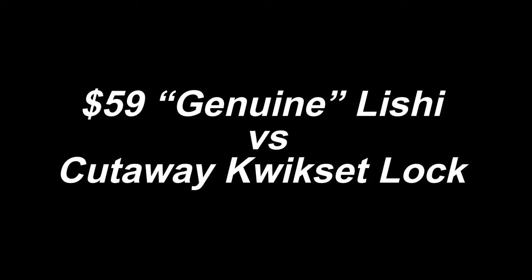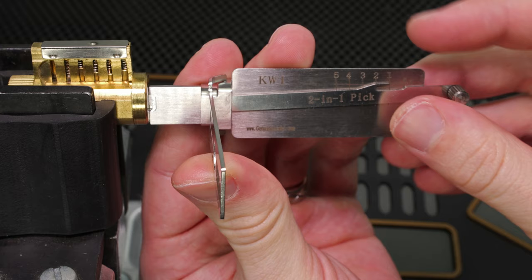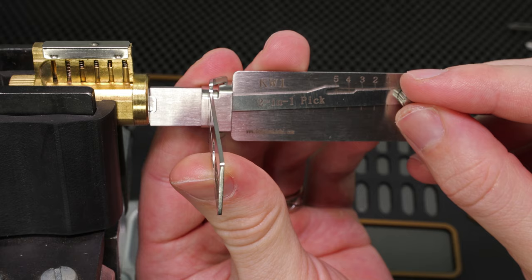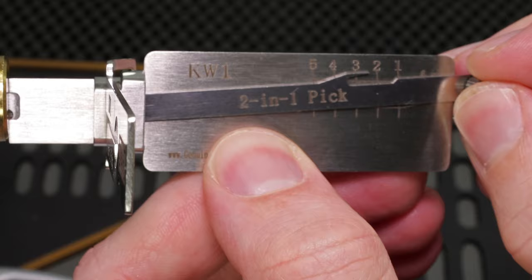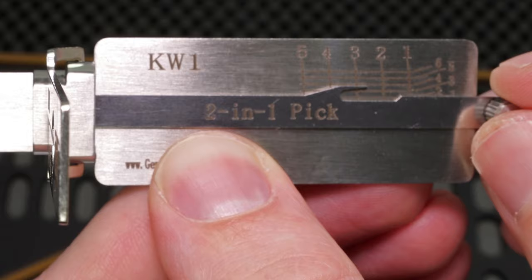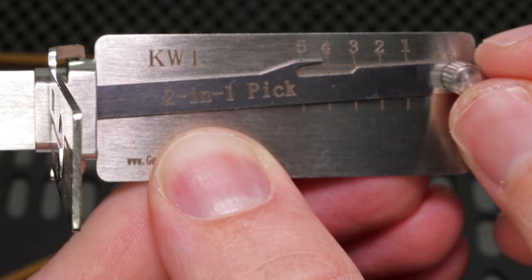Alright, so let's try out the Genuine Lishi and see how it does picking and decoding this Kwikset lock. So starting off on 1, got a good click. 2, got a good click. 3, got a good click. 4, and 5. And the lock is now opened up. So now I'm going to decode this. I'm going down all the way to 4. And now in chamber 2, I'm going all the way down to 2. Chamber 3, I'm going down to 3. 4 is a 6. 5 is a 1. And that was a really quick pick and decode.